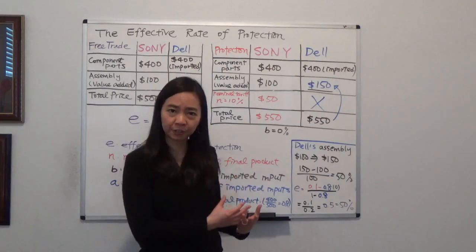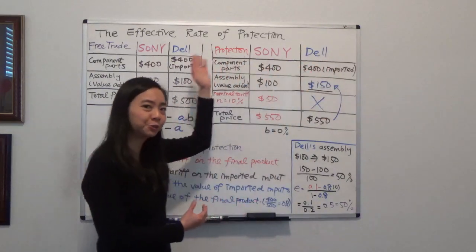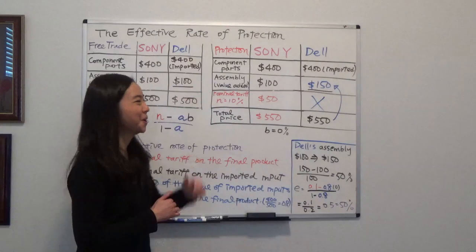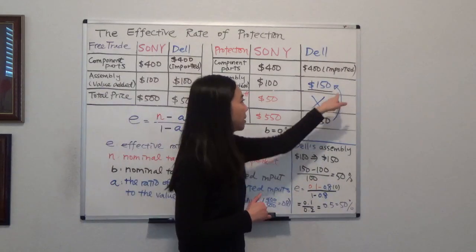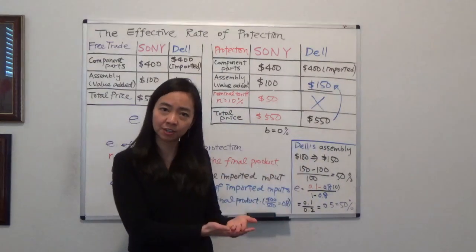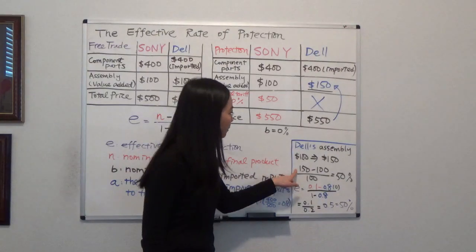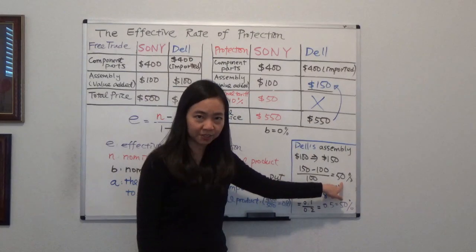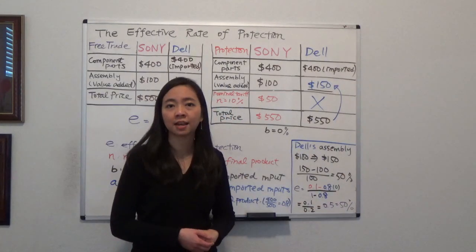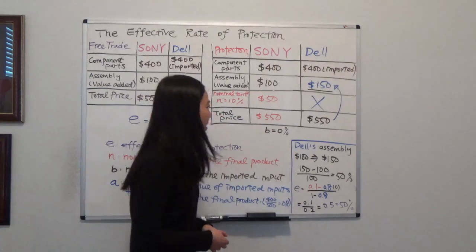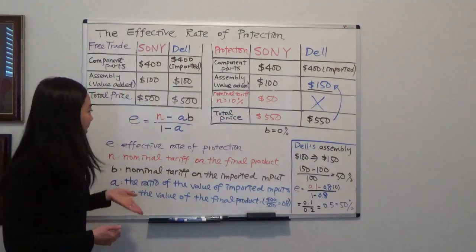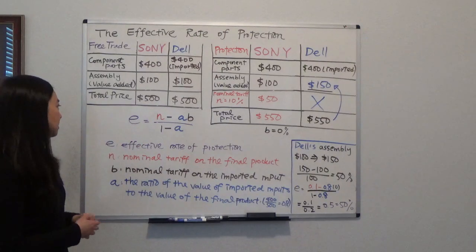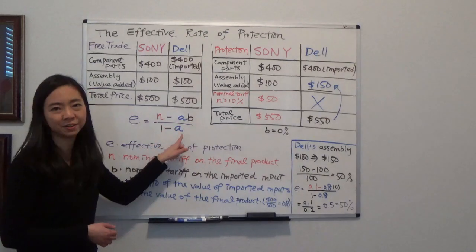So how much more inefficient can Dell be compared to free trade? Under free trade, they needed to make sure their assembly was within $100. Now their assembly can go up to $150. So how much more inefficient is that? It's $150 minus $100 divided by $100, and that gives you 50%. So the effective rate of protection is actually 50%. We can also use the easier formula from the textbook.